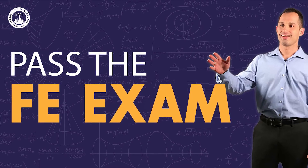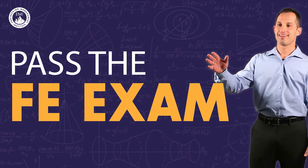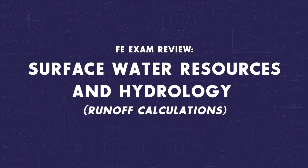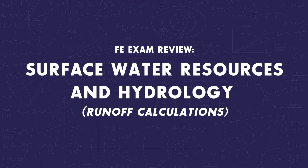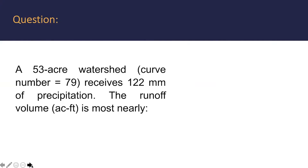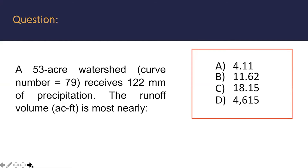Let's jump right into it. A 53-acre watershed with a curve number of 79 receives 122 millimeters of precipitation. The runoff volume in acre-feet is most nearly what? And they provide you with four possible answers.